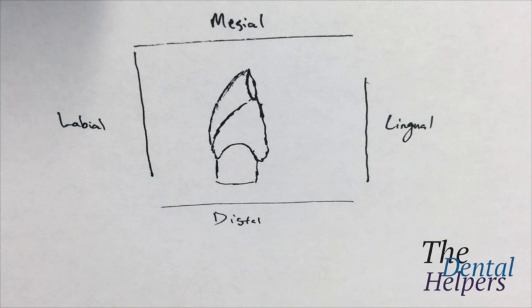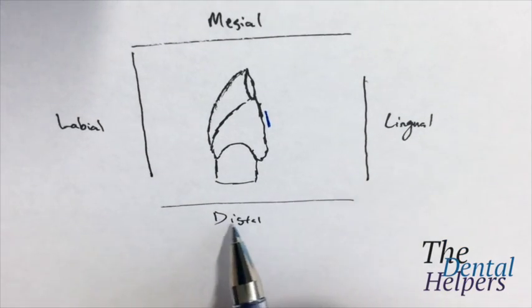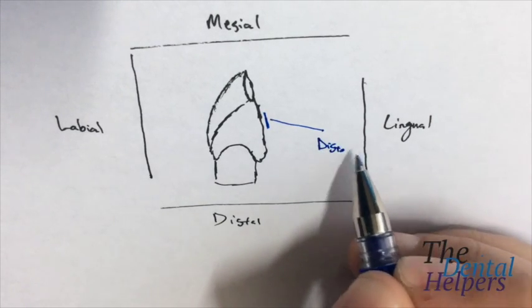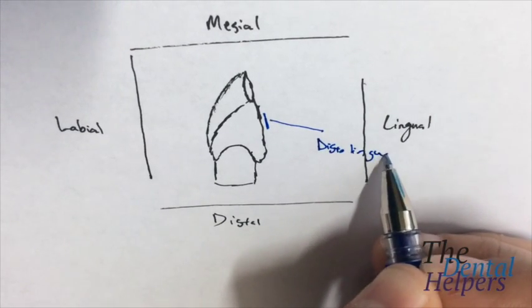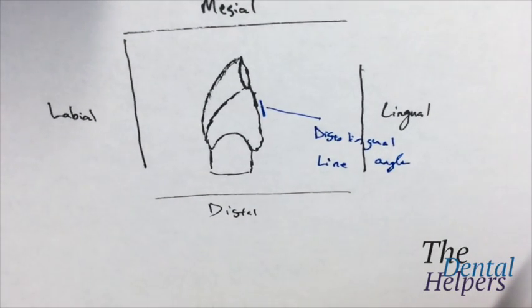So now a big thing they talk about, or dentists talk about, are the different line angles. So this area right here, we're in the distal area and the lingual. So it's going to be called the distal lingual line angle. And the reason this is important to know is it's not to confuse the student. It's more so that when you're communicating with your professors or communicating with your peers, they know exactly what you're talking about.